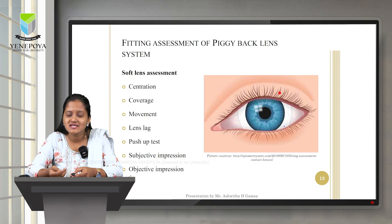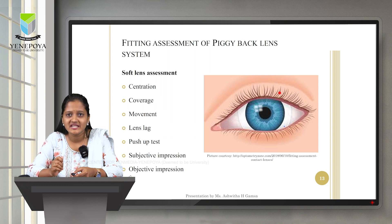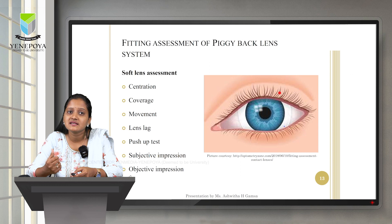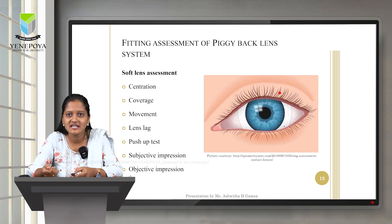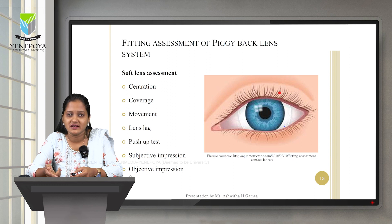The push-up test checks whether the lens is fitted too steep or too flat. The examiner tries to dislodge the contact lens using the lower lid and assesses the pressure required. If high pressure — around 90% — is needed to dislodge it, the lens is too tight. If very little pressure — around 10% — dislodges it easily, the lens is too flat and needs to be changed.